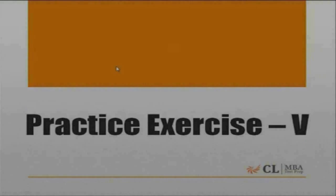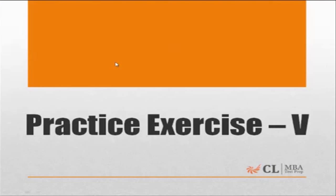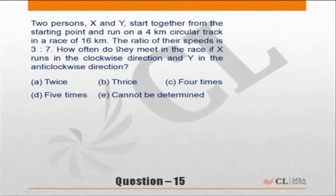That is Exercise 5: Time, Speed, Distance. Let's go through the question. Two persons X and Y start together from a starting point and run on a 4 kilometer circular track in a race of 16 kilometers. The ratio of speeds is 3 to 7. How often do they meet in the race if X runs in